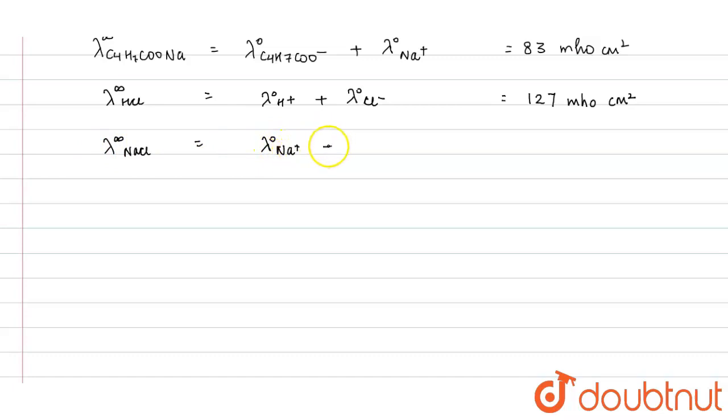Similarly for NaCl, lambda naught of Na plus plus lambda naught of Cl minus, and its value given is 426 mho centimeter square.